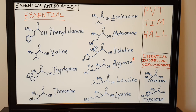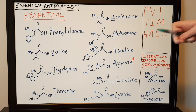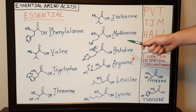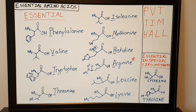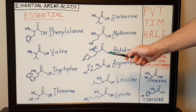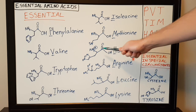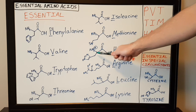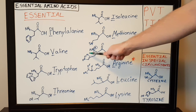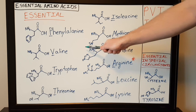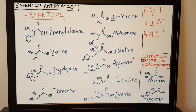The next amino acid is histidine. Histidine is one of the basic amino acids, and it's attached to a five-membered ring that contains two nitrogen atoms.